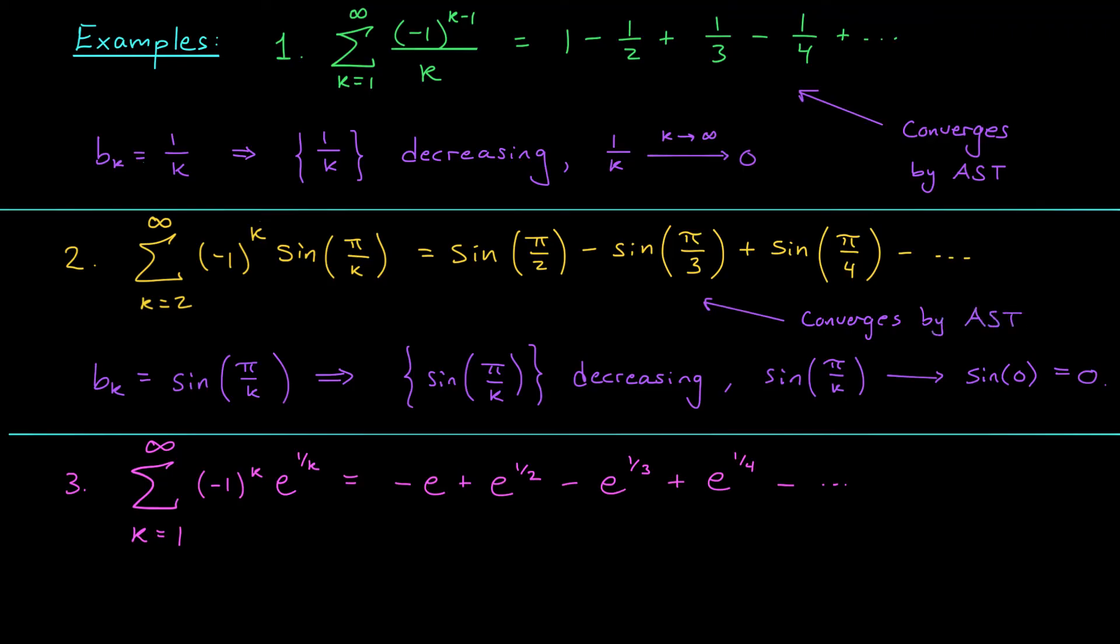Okay, one more example. We have the sum from 1 to infinity of minus 1 to the k, e to the 1 over k. That's minus e plus e to the half, minus e to the third, plus e to the quarter, and so on. Notice that the terms really do alternate. e to any power is going to be positive, and then we have minus, plus, minus, plus, etc. Okay, great. We have an alternating series. So I'm going to try to apply my alternating series test. If I ignore the pluses and minuses that you see here, I can get a sequence bk of positive terms, e to the 1 over k.